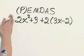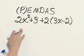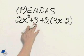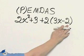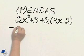What? An order of operations? 2x squared plus 3 plus 2, but I can't combine this in the parentheses.